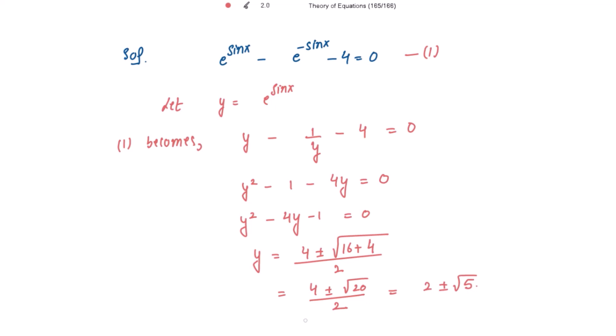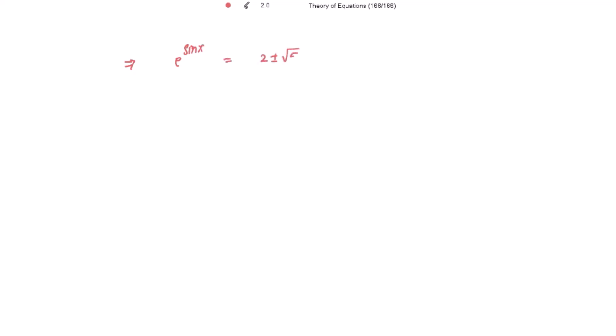And what is y? It is e to the power sin x. So this implies e to the power sin x is equal to 2 plus or minus square root of 5. Now, since e to the power sin x is always positive, the valid value is 2 plus square root of 5, not 2 minus square root of 5.